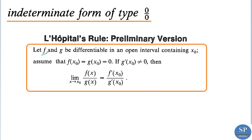Let f and g be differentiable in an open interval containing x₀. Assume that f(x₀) = 0 and g(x₀) = 0. If g'(x₀) is non-zero, then the limit as x tends to x₀ of f(x)/g(x) is equal to f'(x₀) divided by g'(x₀).